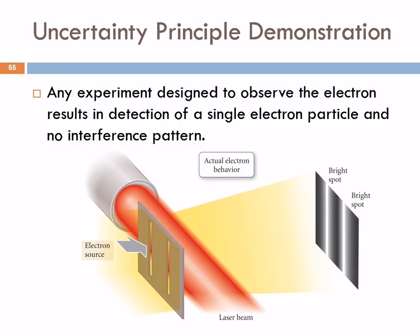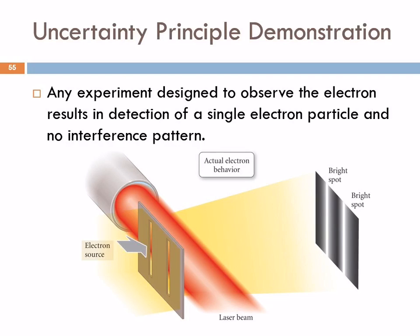If we take the same double-slit experiment but now put a laser beam behind the slit so that when an electron goes through we can see it and identify which slit it went through, the interference pattern goes away and we see two lines. Just the act of putting the laser beam there forces the electron to act like a particle because we're observing it. Whenever we design an experiment to observe it as a particle or as a wave, it messes things up.